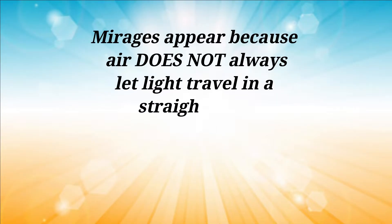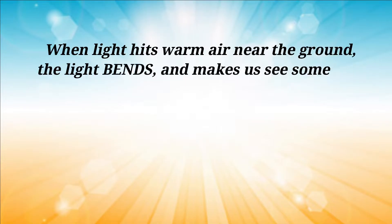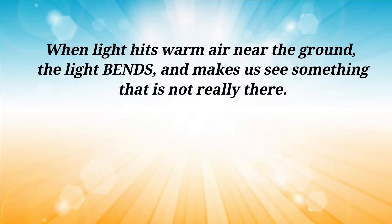Mirages appear because air does not always let light travel in a straight path. When light hits warm air near the ground, the light bends and makes us see something that isn't really there.